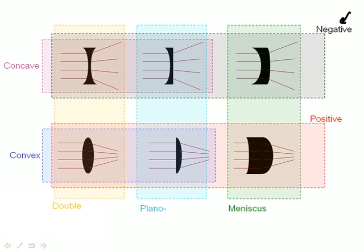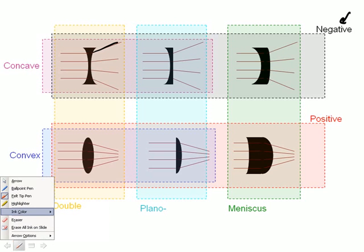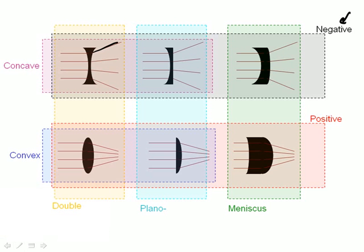Negative lenses, if parallel rays of light come in, the rays of light diverge or spread out on the other side. For positive lenses, which are shown here in red, as rays of light come in, they converge, and they're going to focus down onto the optic axis on the right side of the lens. So lenses can be either negative or positive.